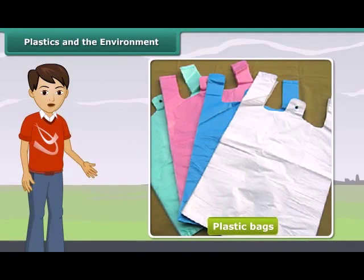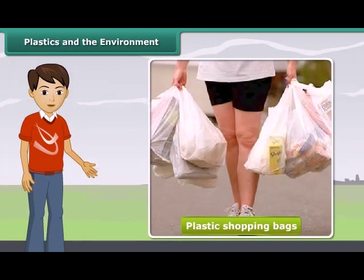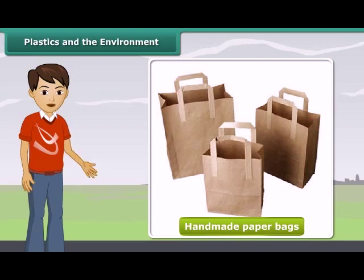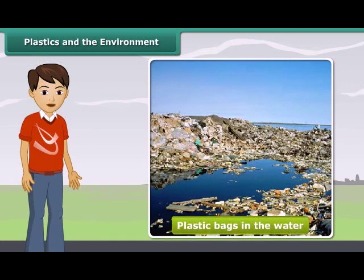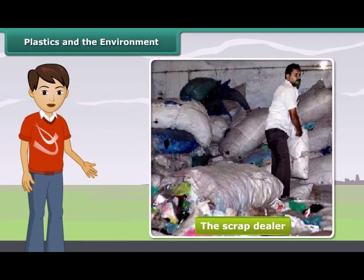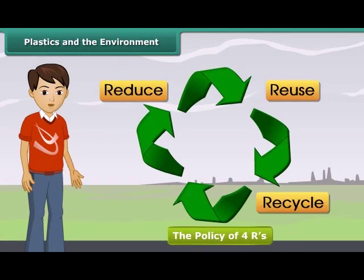There are a number of steps that we can take as environmentally conscious citizens to safeguard our environment from the growing menace of plastics. We can replace plastic shopping bags with jute bags or handmade paper bags. Instead of littering everywhere, particularly on roads, we should put plastic objects in dustbins marked as non-biodegradable, segregating them from biodegradable wastes. Sell plastic scraps to the scrap dealer for recycling. Adopt the policy of 4 R's: reduce, reuse, recycle and recover.